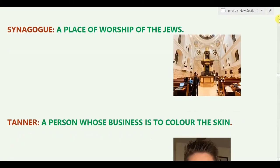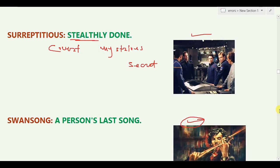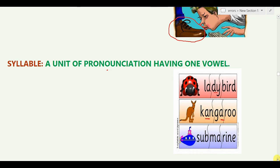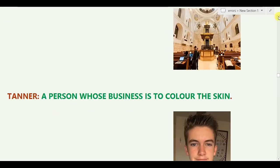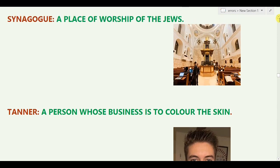The next word is 'Synagogue.' A synagogue is a place of worship for Jews — just as Muslims have a mosque and others have a temple, the Jews have a synagogue. Where the Jews pray, that place is called a synagogue.